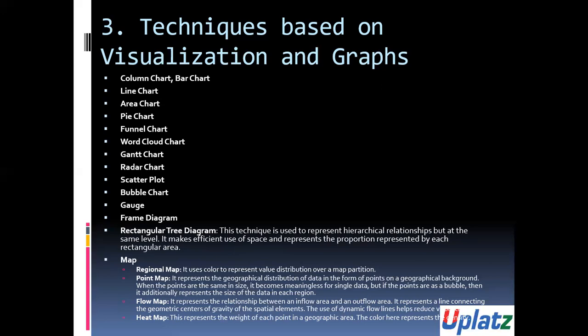Then we have map. In the map, we have regional maps, point map, flow map, and heat map. The heat map represents the weight of each point in a geographic area. The color here represents the density. Regional map uses color to represent value distribution over a map partition. The point map represents the geographical distribution of data in the form of points on a geographical background. Then the flow map represents the relationship between an inflow area and an outflow area.